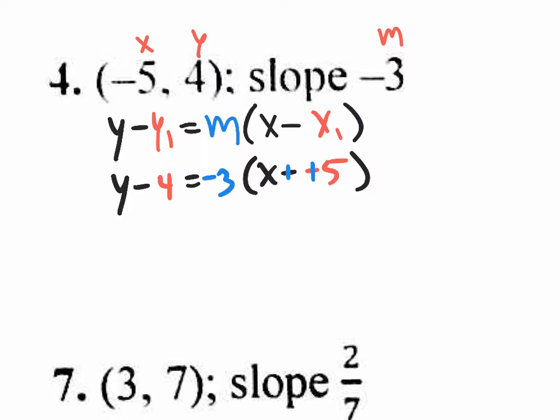You want y by itself, you don't want parenthesis. What are you going to do? Distribute. Yeah, so negative 3 times x, what is that? That's negative 3x. And then negative 3 times 5, that's plus 15. Oh yeah, negative 15. I'm sorry. Not positive 15, negative 15.